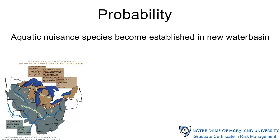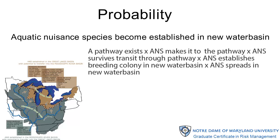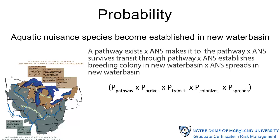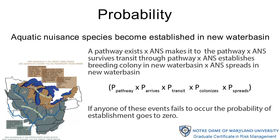That sequence is: a pathway exists, and the aquatic nuisance species makes it to the pathway, and the aquatic nuisance species survives transit through the pathway, and the aquatic nuisance species establishes a breeding colony in the new water basin, and the aquatic nuisance species spreads in the new water basin. Mathematically, this is expressed as a multiplicative equation. If any one of these events fails to occur, the probability of establishment goes to zero. If that happens, then there is no risk.